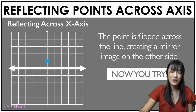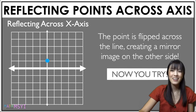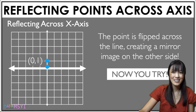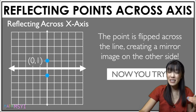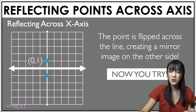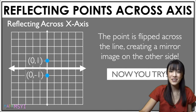Put your finger where you think the new point will be. Let's animate it. Now think of the coordinates — what will your new coordinates be? They will be 0, negative 1.